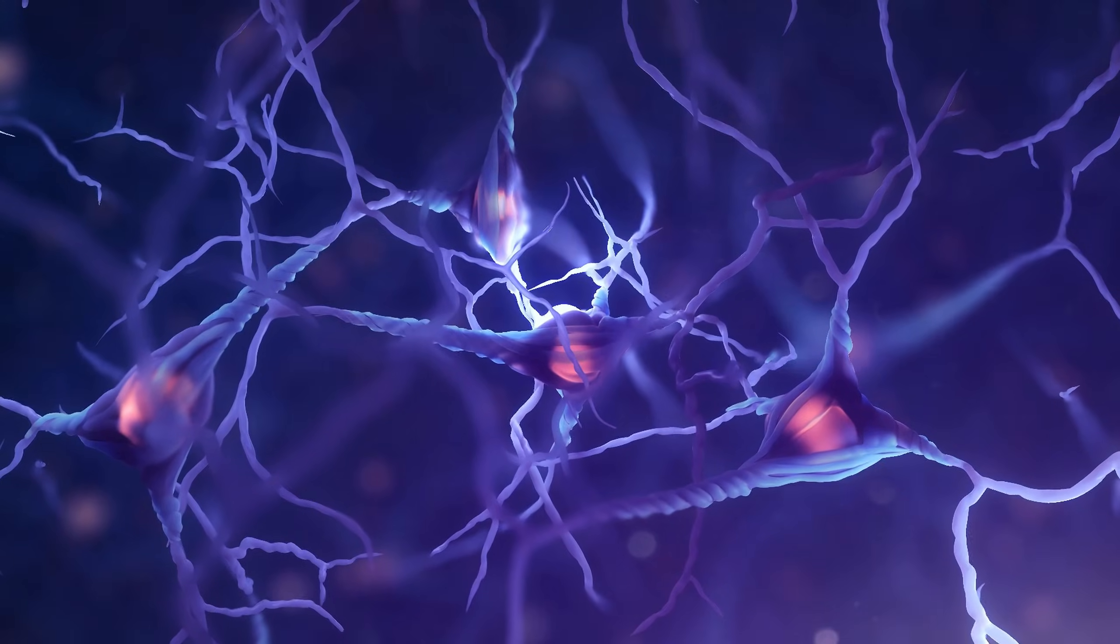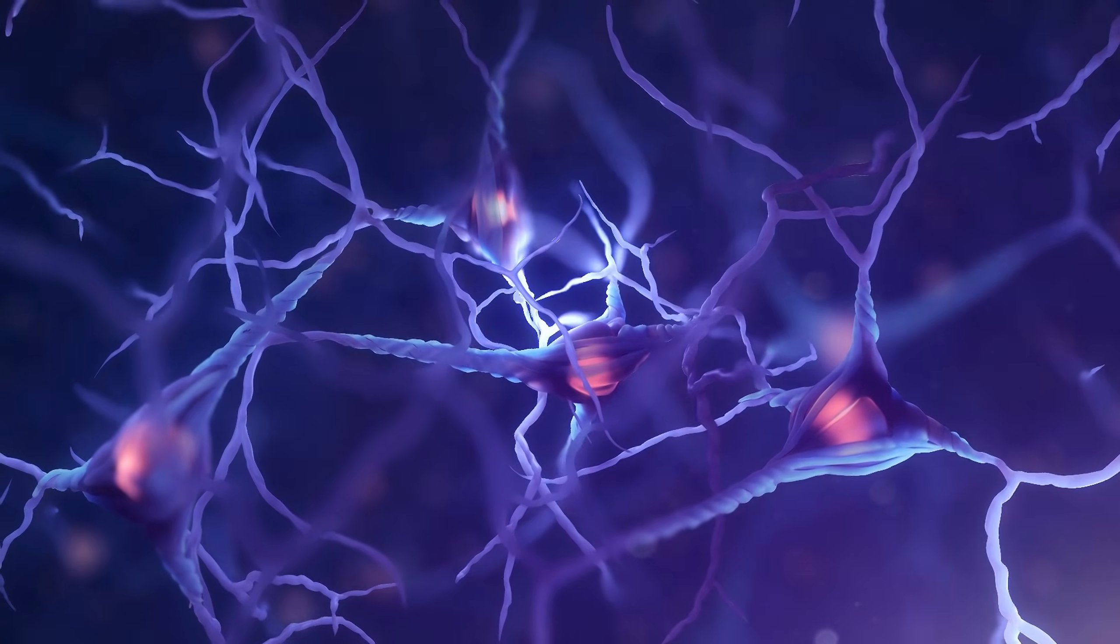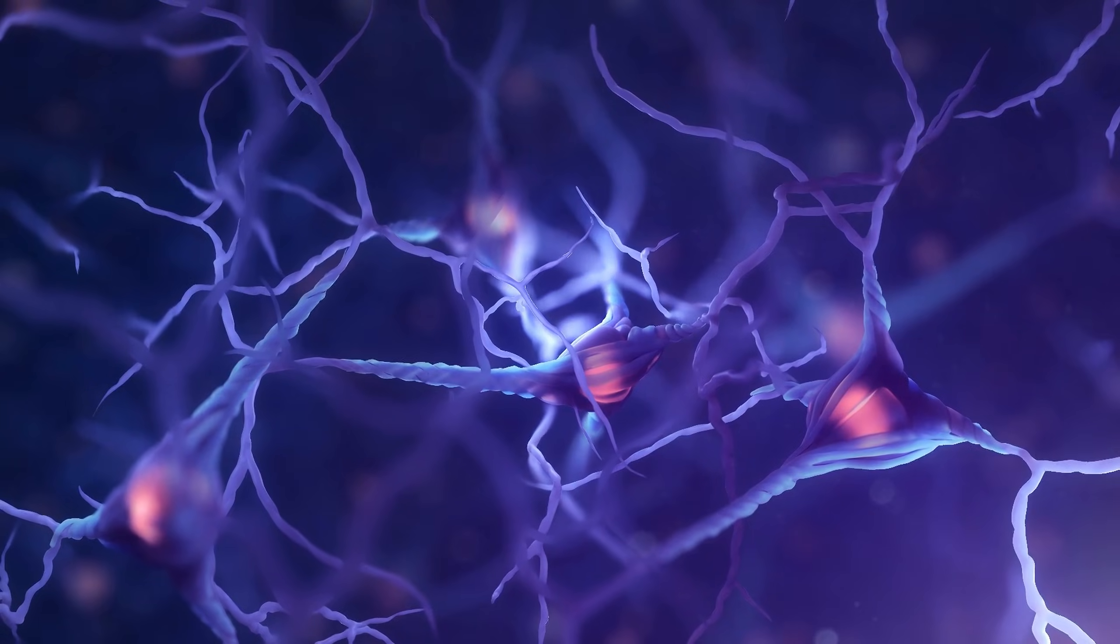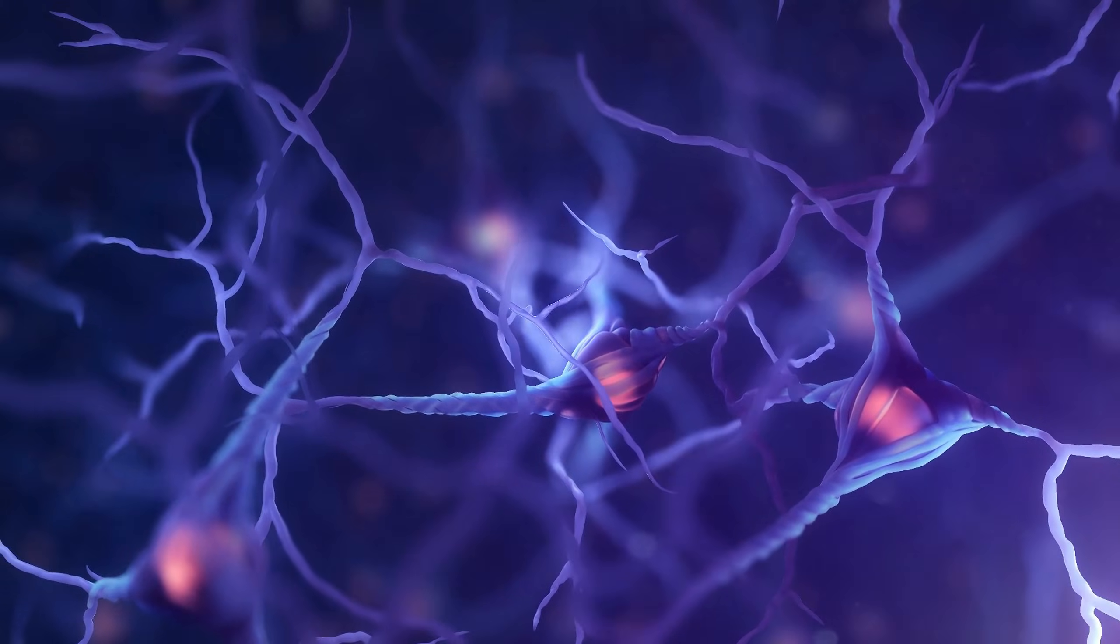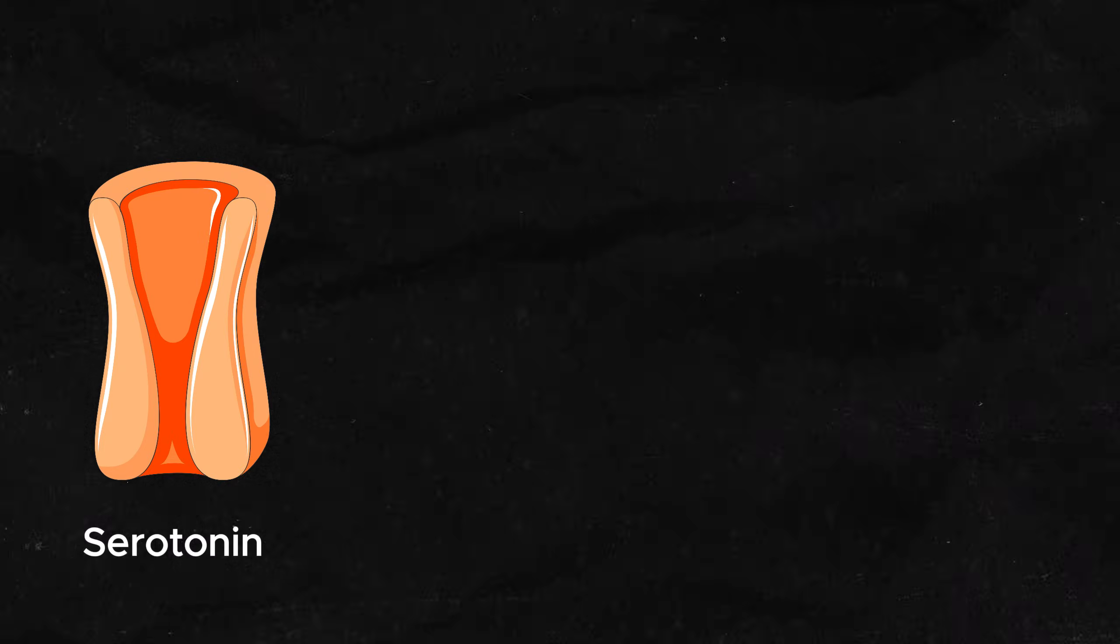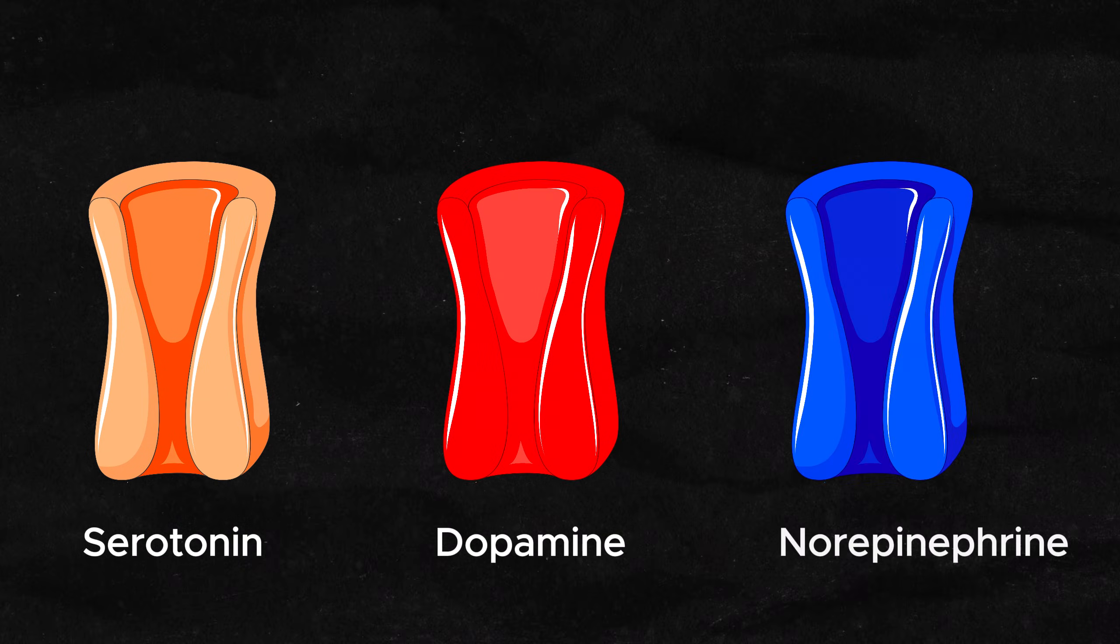There is strong evidence that MDMA exhibits the majority of its effects through interactions with the monoamine transporters, of which there are three major types: serotonin, dopamine and norepinephrine.